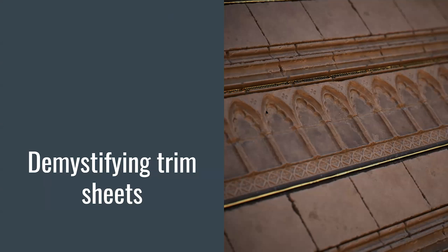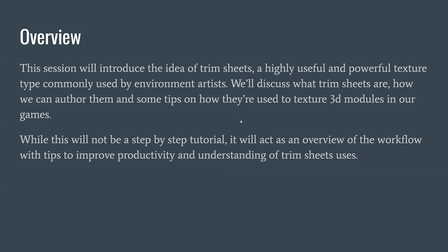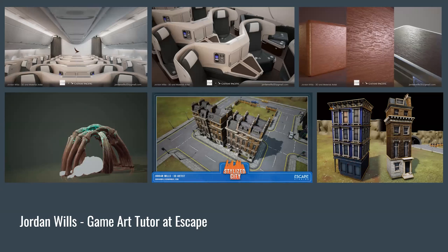I'm going to turn off the camera just to make sure the stream quality is as good as it can be and that it's not choppy. So yeah, that's what we're going through today — demystifying trim sheets. We're going to be introducing the idea of a trim sheet, which is a highly useful and powerful texture type very commonly used by environment artists. We'll talk about what they are, some tips on how to author them, and how to use them in 3D environments. It's not a step-by-step tutorial but more of an overview.